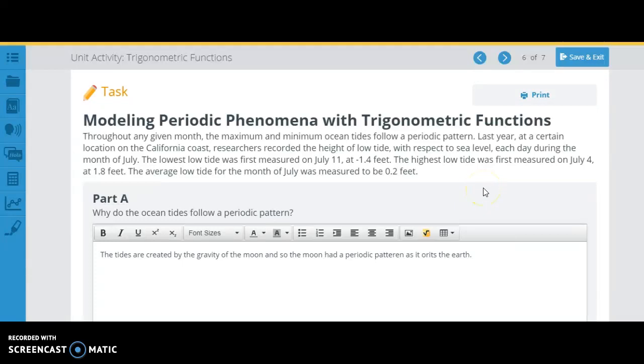Alright, so we're taking a look at this unit activity, trigonometric functions. It's done almost perfectly, but let's just take a little look. So we're making a trig function to talk about the low and high tides. The lowest low tide was measured on July 11th at negative 1.4 feet. The highest low tide was measured on July 4th at 1.8 feet. So we're going to be starting with the July 4th one.